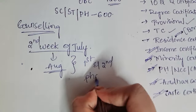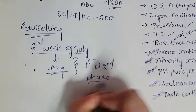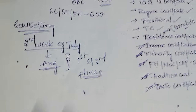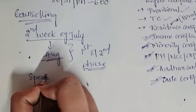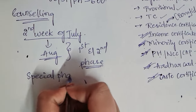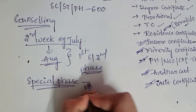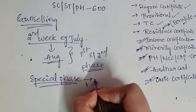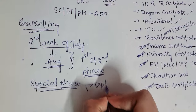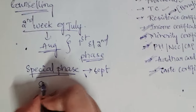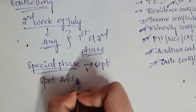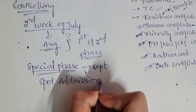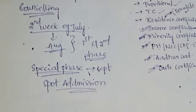You will be having only two phases for this counseling. After that, there will be a special phase, which will be held in September. After the special phase, there will be a spot admission, and after spot admission, your college will reopen.